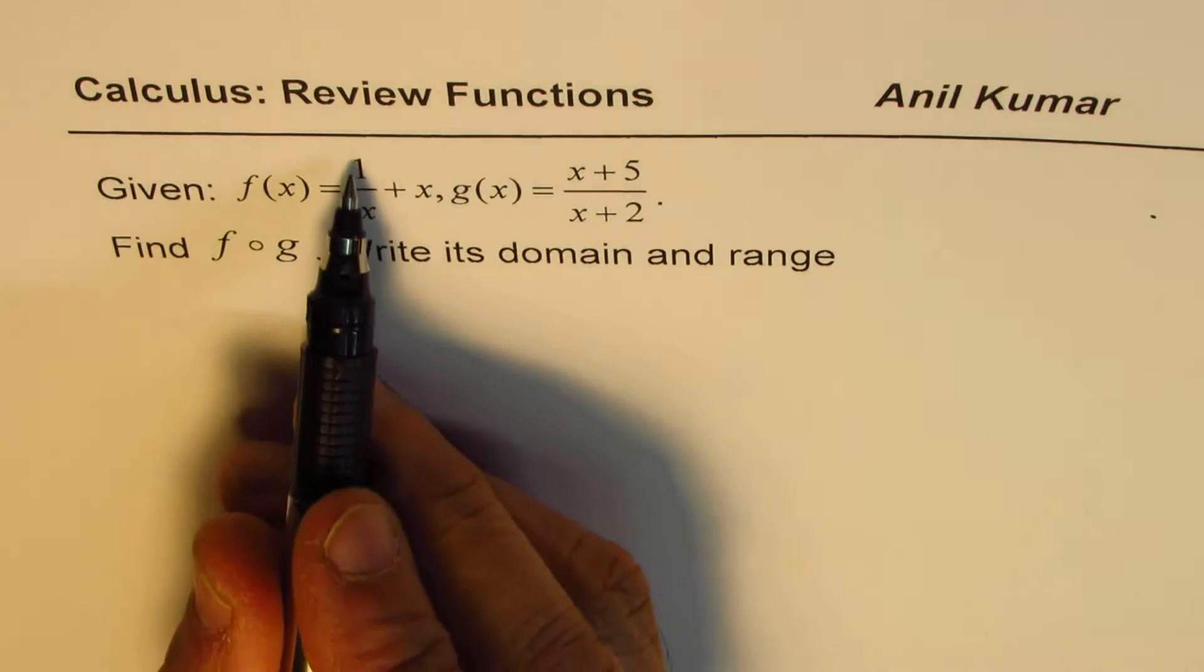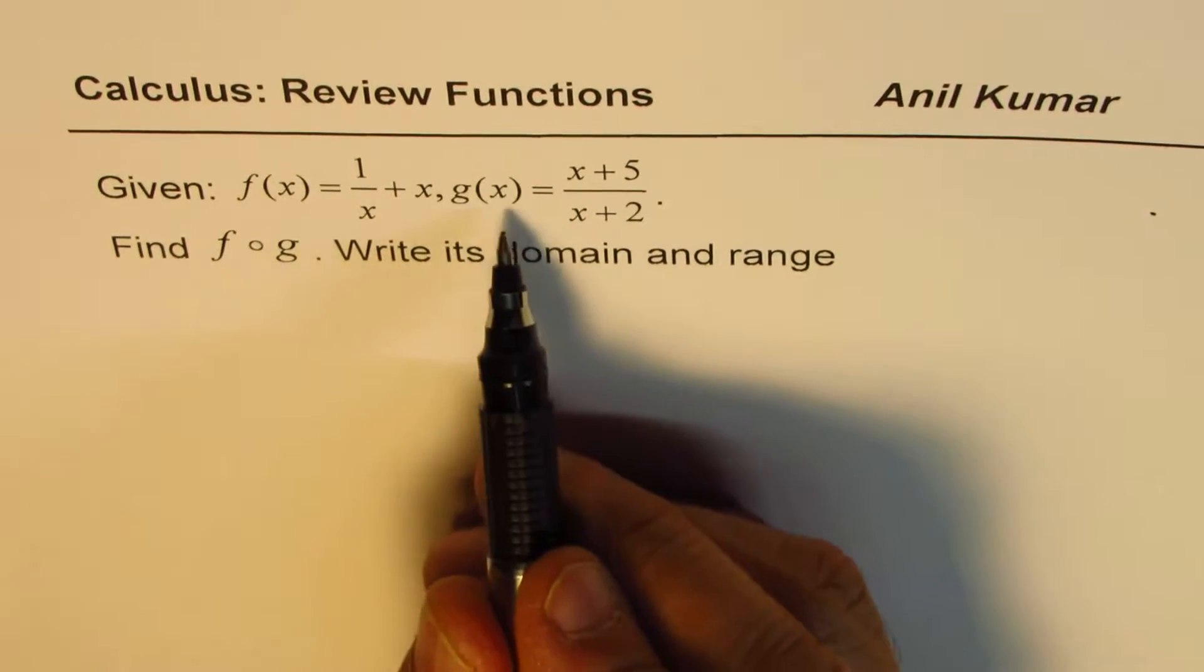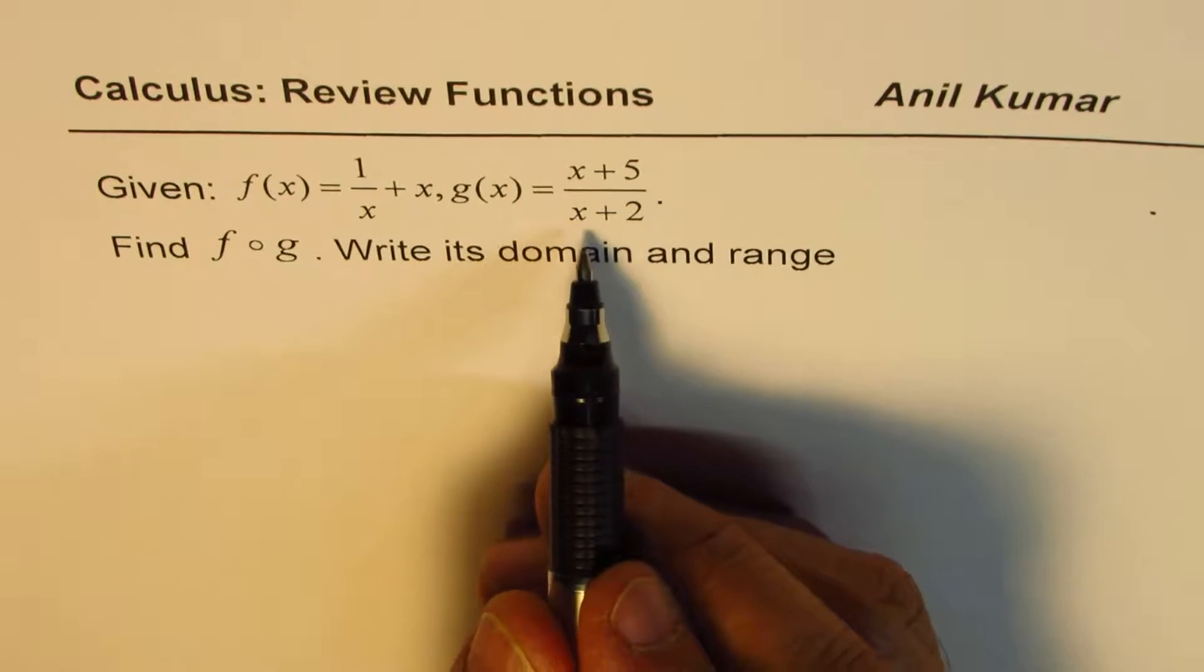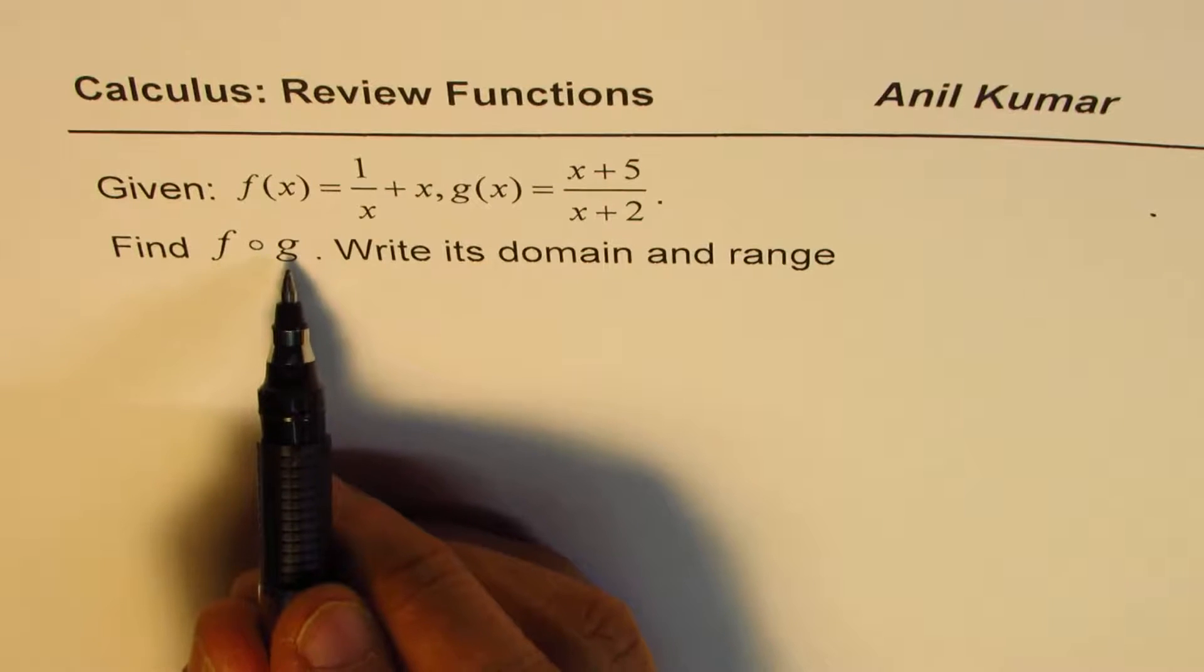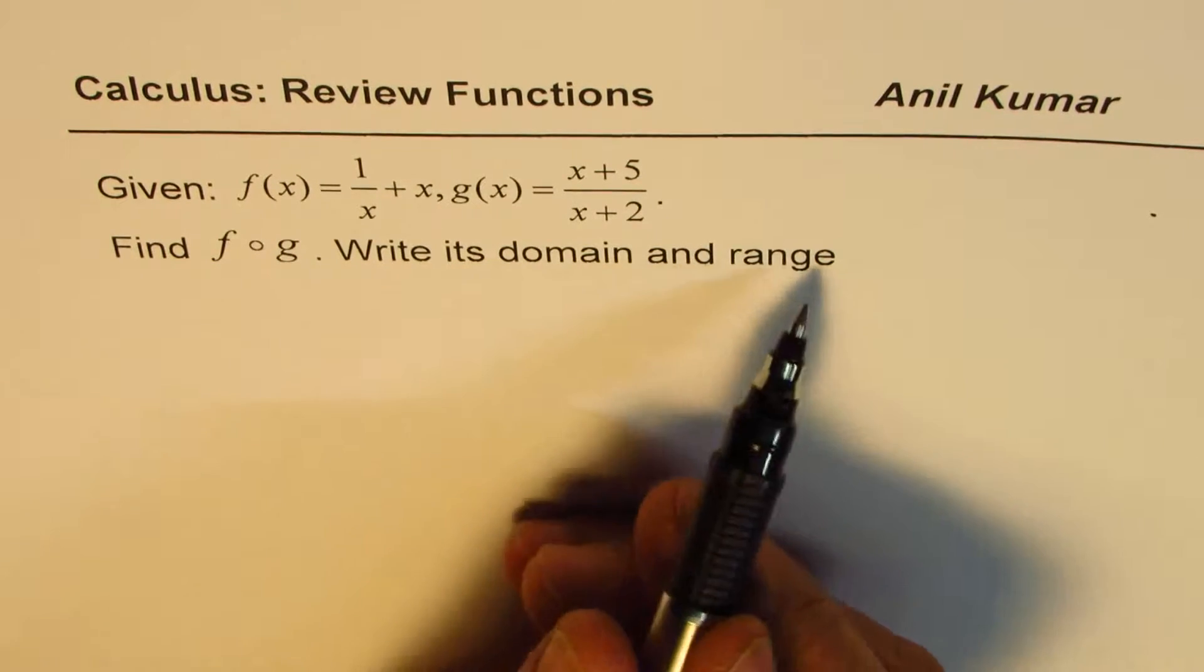Given f of x equals 1 over x plus x, g of x equals x plus 5 divided by x plus 2, find f of g, write its domain and range.